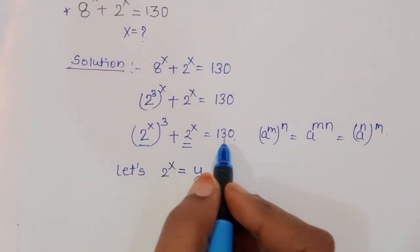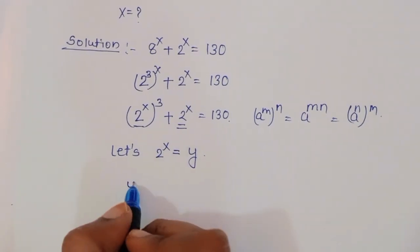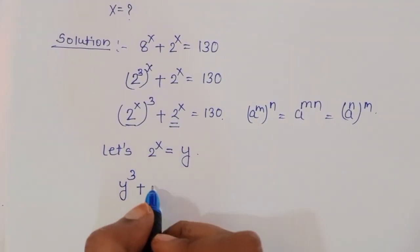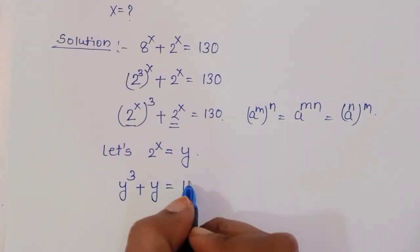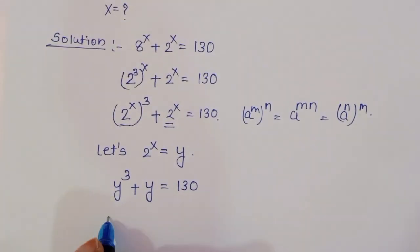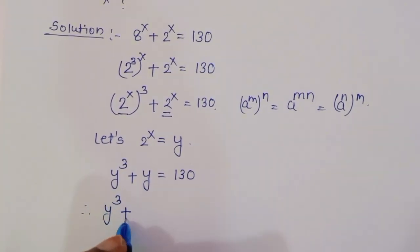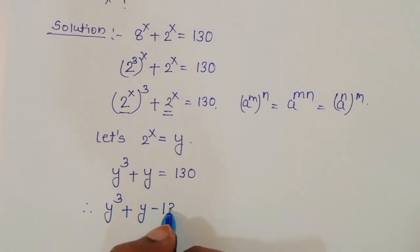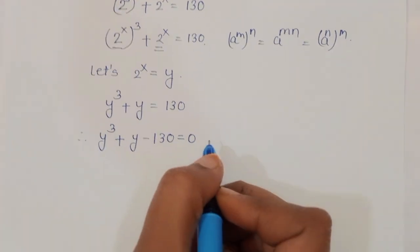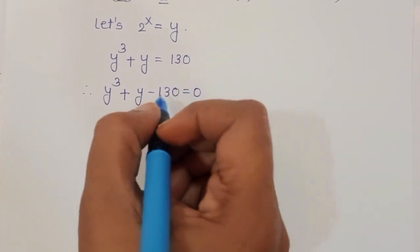So this becomes y power 3 plus y is equal to 130. Therefore, y cube plus y minus 130 is equal to 0. This is the equation we need to solve.